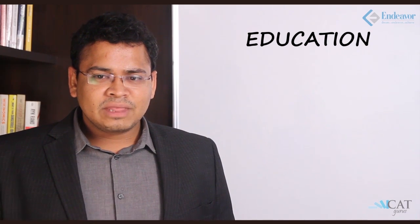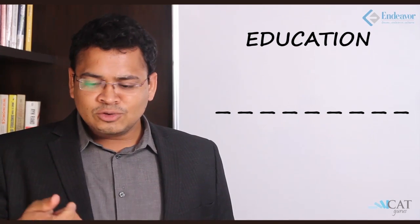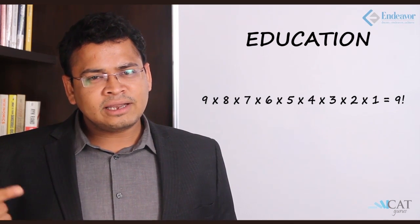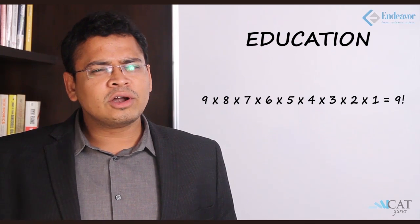The word 'education' is E, D, U, C, A, T, I, O, N — nine alphabets. If I put nine blanks and place the first alphabet E, I have nine places to put it, so E can be placed in nine ways. I pick up the next one, D, that can be placed in eight ways. Extending the logic further: U in seven, C in six, A in five, and so on. Finally it is nine into eight into seven into six into five into four, going on till one — which can be called nine factorial.